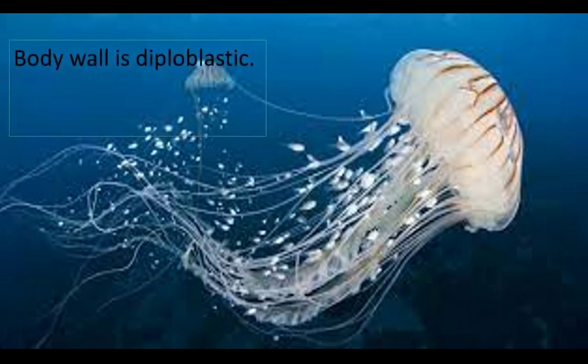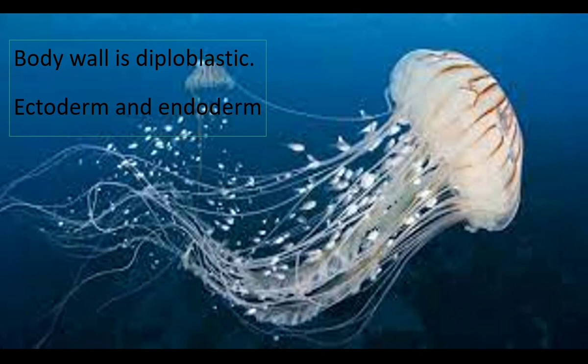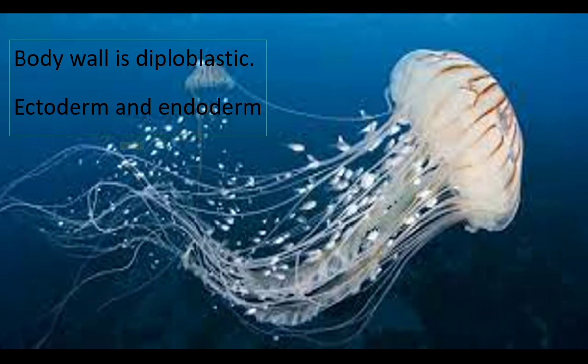Animals of Coelenterata have two layers in the body wall, so they are diploblastic animals. The two layers are the outer ectoderm and the inner endoderm. In between the endoderm and ectoderm, these organisms have mesoglia. Mesoglia is not made up of cells, so it is not considered a layer.